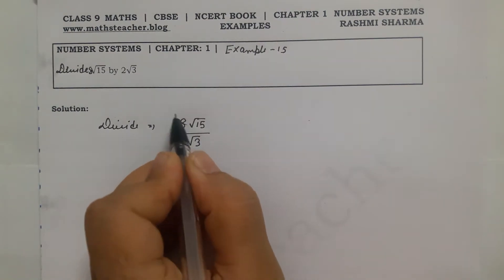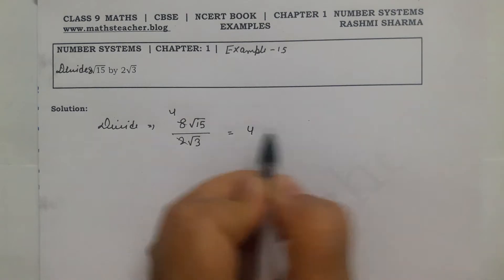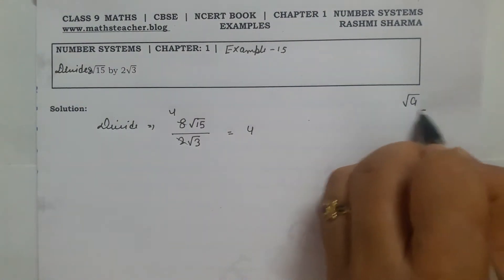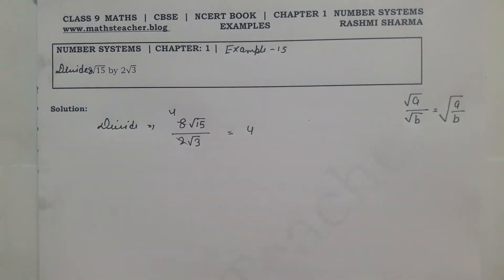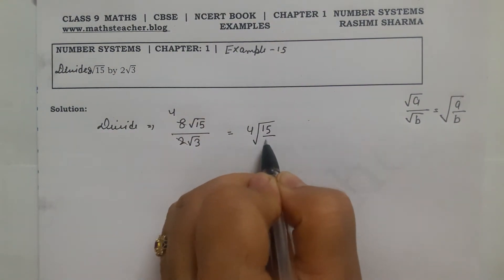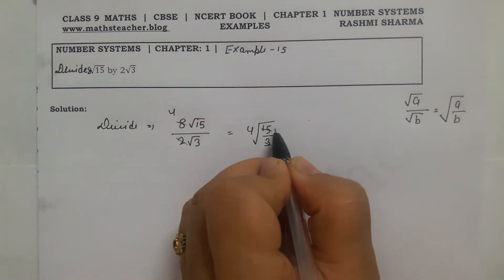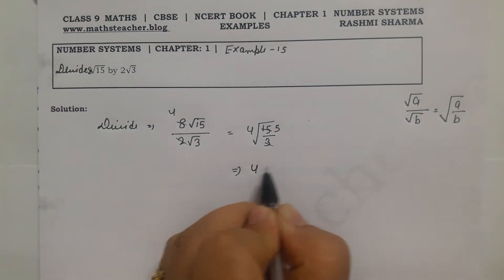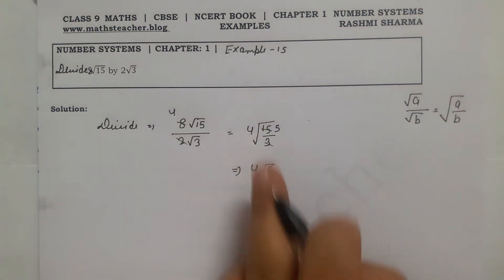8 divided by 2 gives us 4. Then using the identity: under root a upon under root b can be written as one single root — so 4 times root (15 divided by 3). Now 15 divided by 3 is 5, so the final answer is 4 root 5.